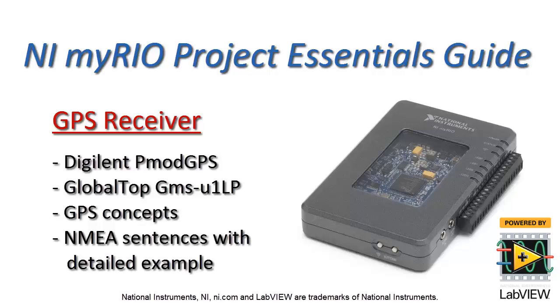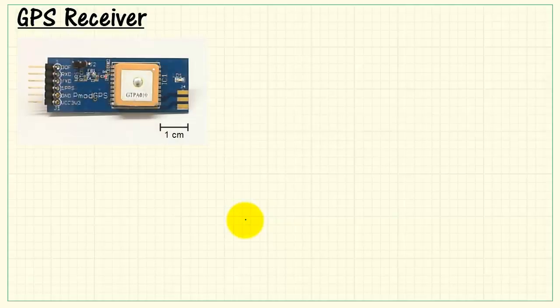Let's take a look at this GPS receiver. Consider some general concepts about GPS and then take a look at a detailed example of pulling out information from this receiver.